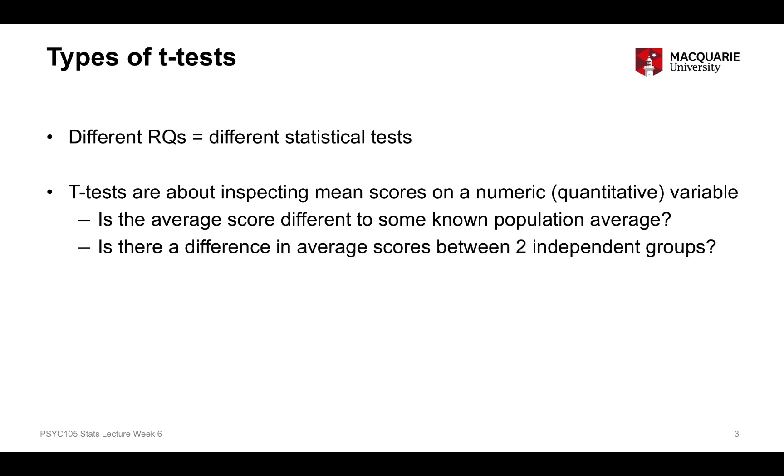The second kind of t-test, the independent samples t-test, is exploring whether there's a difference in the average score, the mean score, between two independent groups, two separate groups.